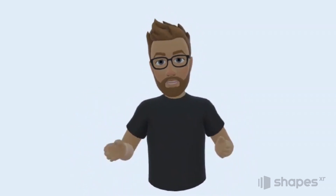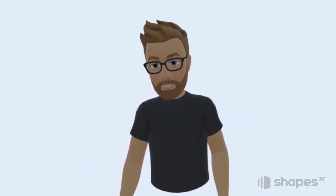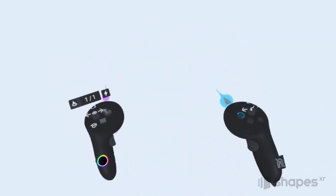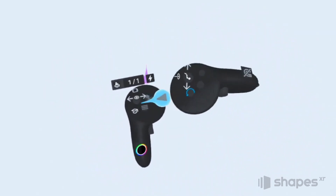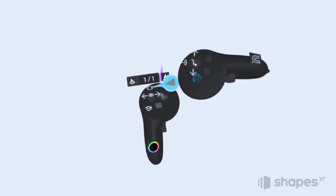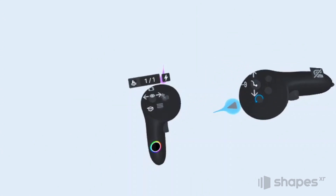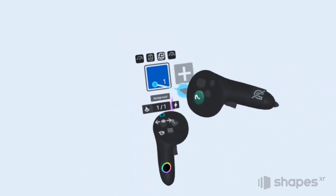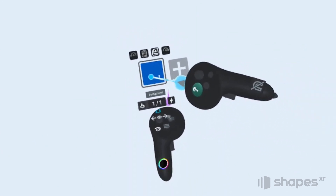So let's jump in and learn how the Stages system works. To activate the Stages system, just press up on your non-dominant thumbstick, and you can see here that we are currently on stage 1.